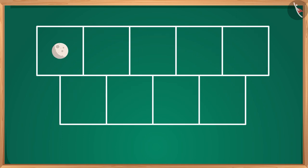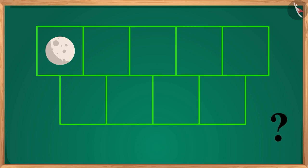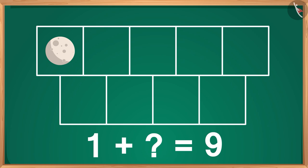Children, now it's your turn. If we put one moon in one frame, how many more moons we will need to fill all the nine boxes with one moon each? In other words, one plus question mark equals nine. Find the answer and share it with your friends and family.